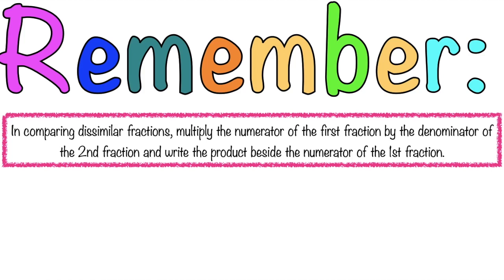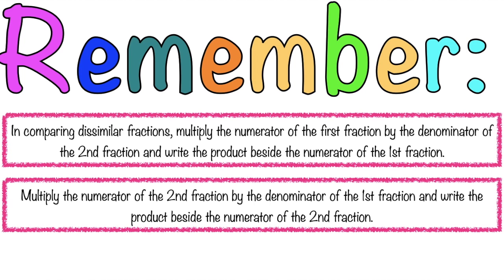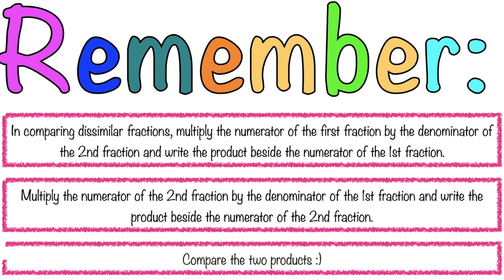Always remember, children: in comparing similar fractions, multiply the numerator of the first fraction by the denominator of the second fraction, and write the product beside the numerator of the first fraction. Next, multiply the numerator of the second fraction by the denominator of the first fraction, then write the product beside the numerator of the second fraction. And lastly, compare the two products.